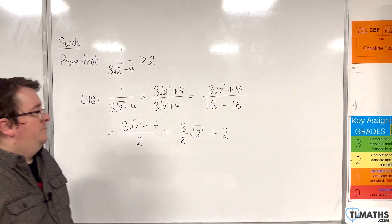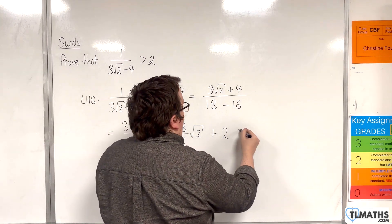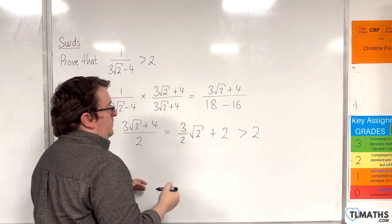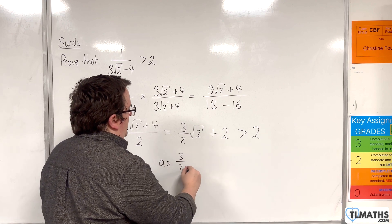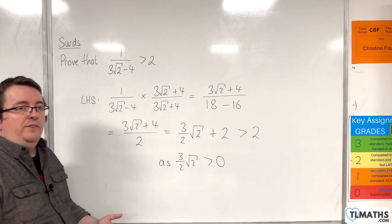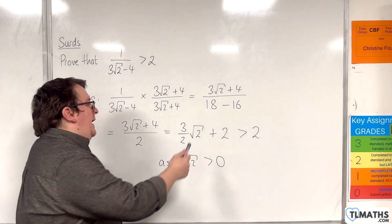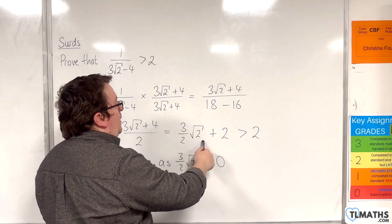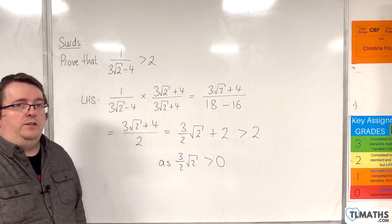Clearly, this has to be greater than 2, as 3 halves root 2 we know is a positive number. It's greater than 0. So, what you've got is a number that you know is greater than 0 and you're adding 2 onto it. Well, clearly, that's got to be greater than 2.